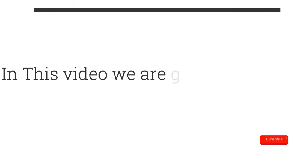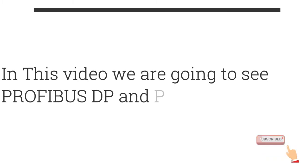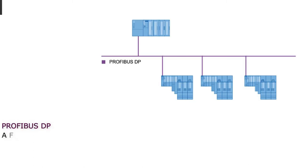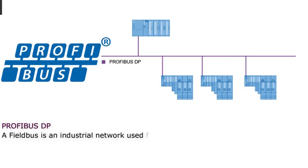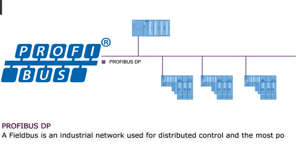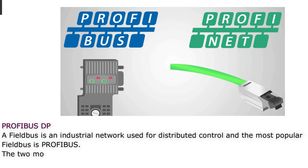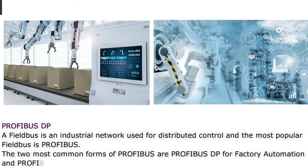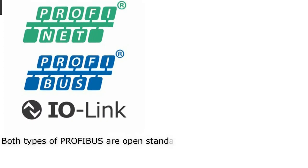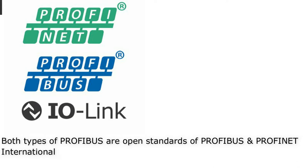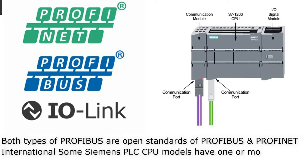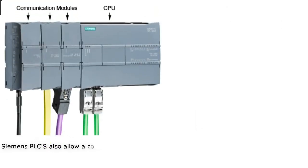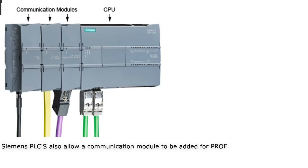In this video we are going to see Profibus DP and Profinet Devices Overview. A fieldbus is an industrial network used for distributed control, and the most popular fieldbus is Profibus. The two most common forms of Profibus are Profibus DP for factory automation and Profibus PA for process automation. Both types are open standards of Profibus and Profinet International. Some Siemens PLC CPU models have one or more built-in Profibus DP ports, and Siemens PLCs also allow a communication module to be added for Profibus DP communication.